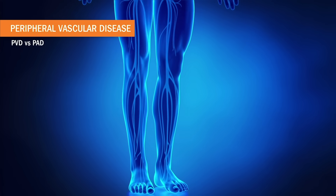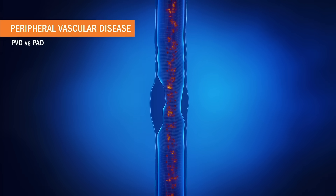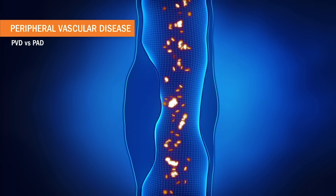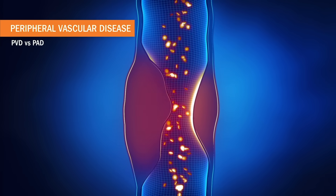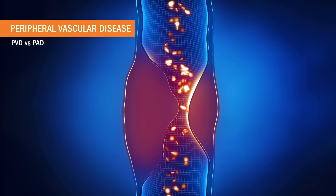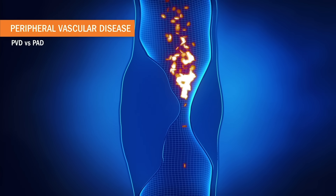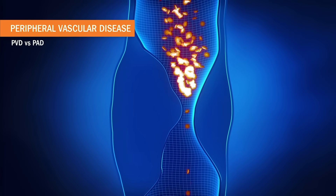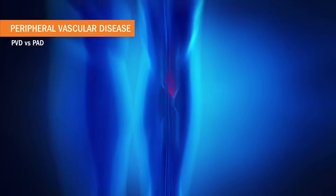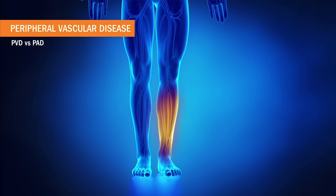Today we're wrapping up peripheral vascular disease, which is just scarring and narrowing of the peripheral blood vessels like those found in the arms and legs, making them really small and stiff and more difficult for blood to get through to the extremities. Now peripheral vascular disease, also called peripheral vascular insufficiency, is technically an umbrella term used to describe diseases affecting both the veins and the arteries.